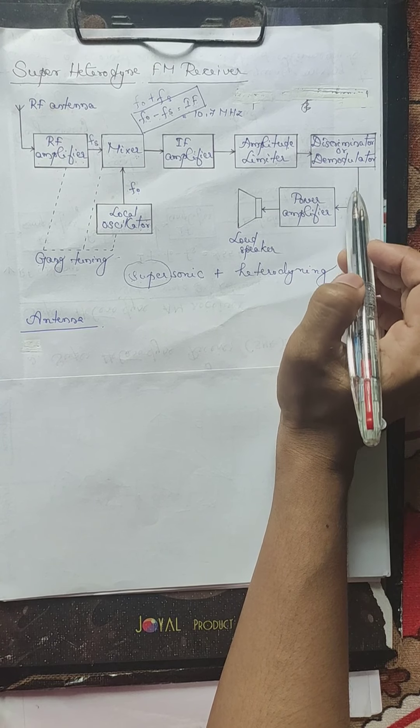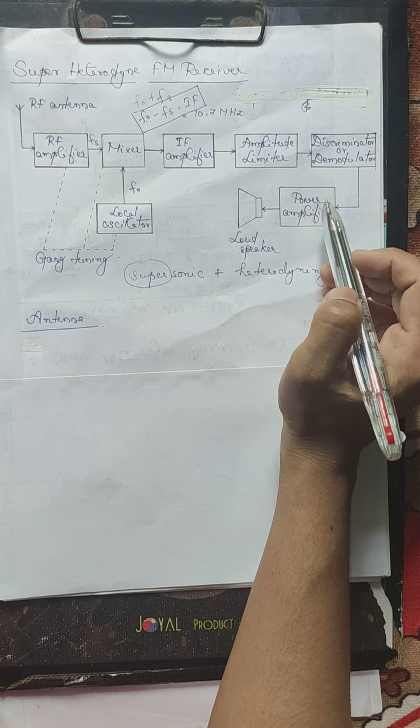That information signal is then fed to the power amplifier. The power amplifier amplifies or increases the power level of the signal, and the output is then fed to the loudspeaker. The loudspeaker converts the electrical signals fed to it into audio signals or sound signals, so the user can properly understand or interpret the signal. This is all about the working of a superheterodyne FM receiver.